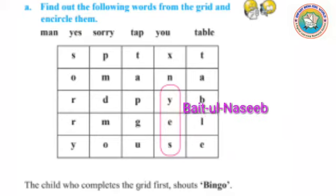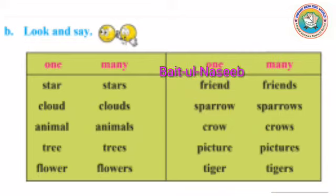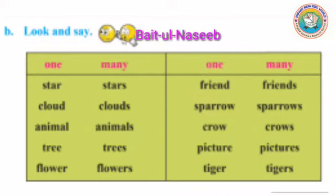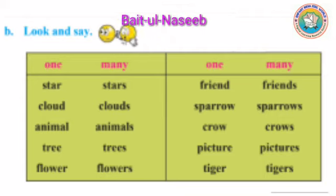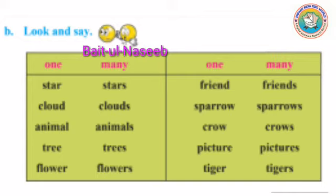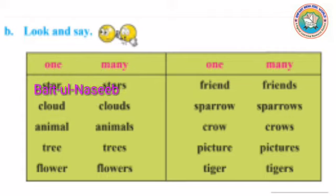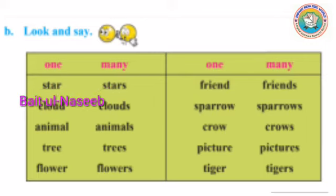समझ में आया बेटा? अब यहाँ पर भी दिया हुआ है — 'Look and Say'। अब जिस तरह आप लोग उर्दू subject में वाहिद जमा करते हैं, उसी तरह English में आपको 'one and many' इस तरह करना पड़ता है। जैसे एक star है तो आप बोलोगे 'one star', और अगर बहुत सारे star हैं तो आप कहोगे 'many stars'।